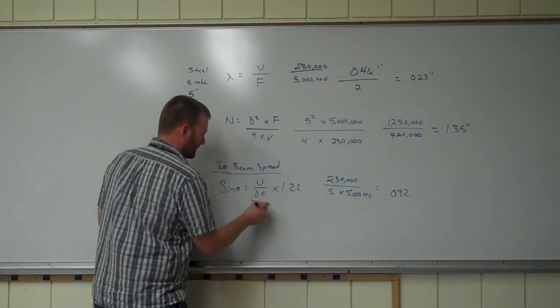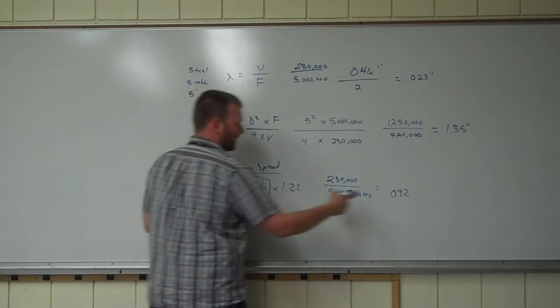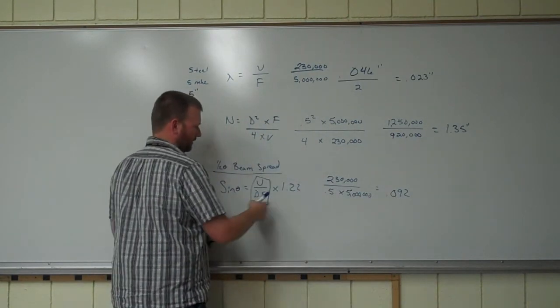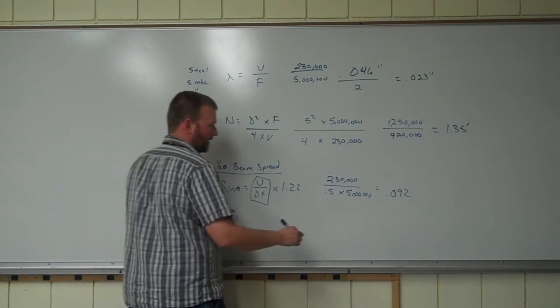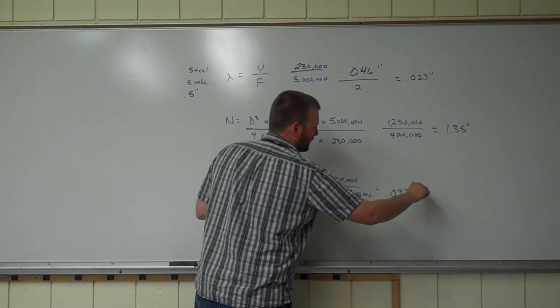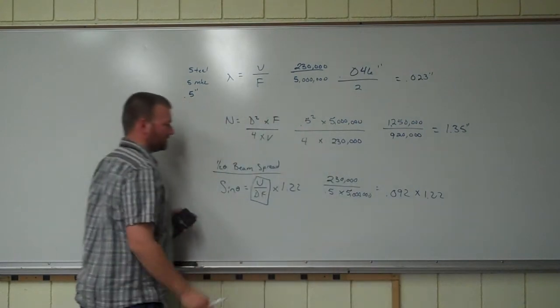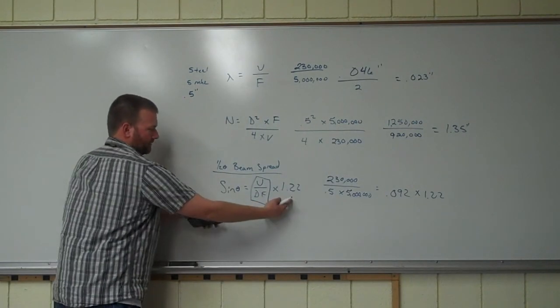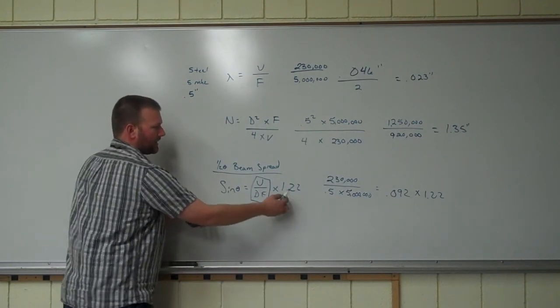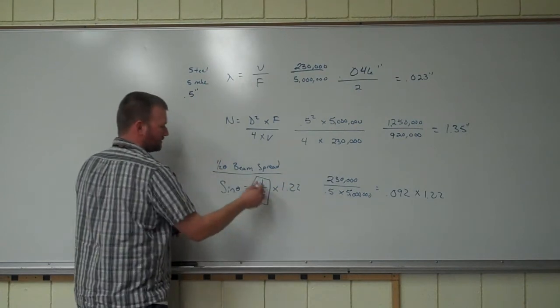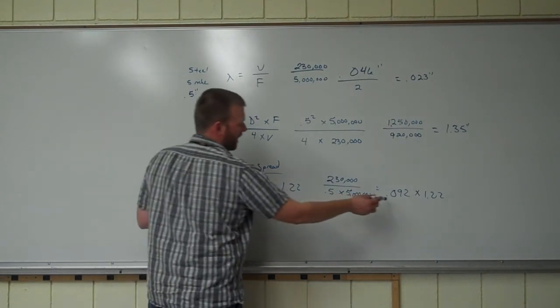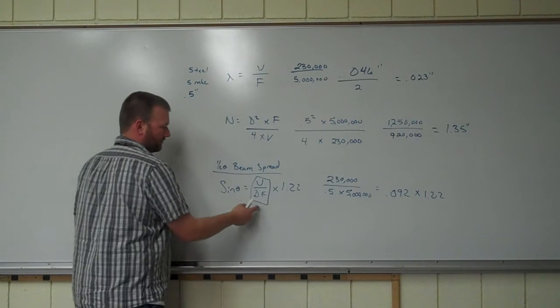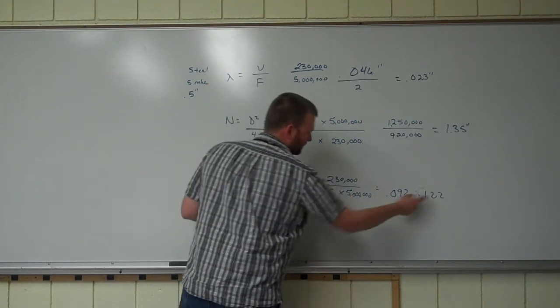That's going to equal 0.092. But that tells us we've done this right here. We've done all this with that right there. We still have to do this and this. So multiply by 1.22. Let me get out of the way here so you can see. We did that. We still need to do these two. So here's our setup for this. Multiply, divide by 0.092. For all that, multiply by 1.22 right there.